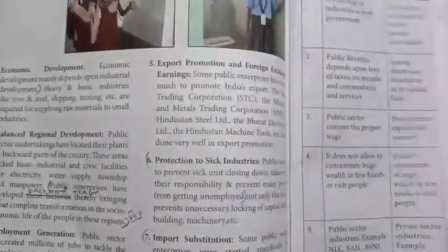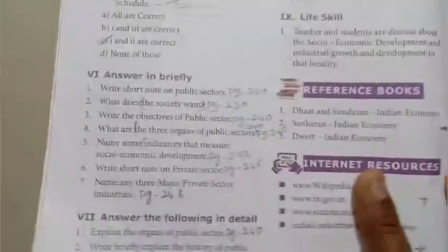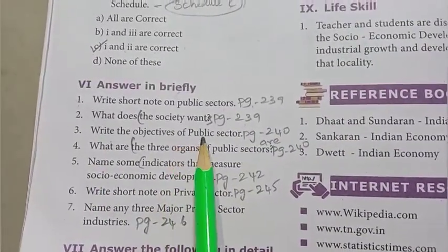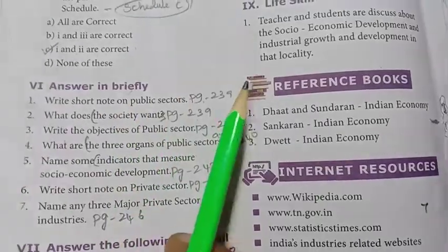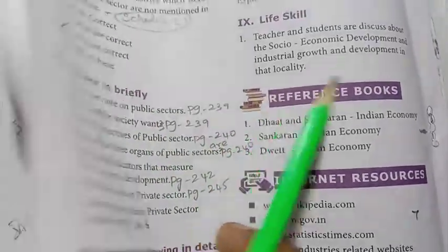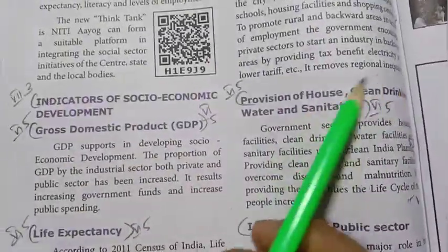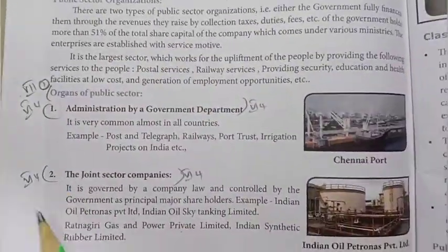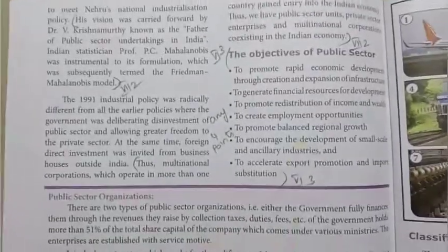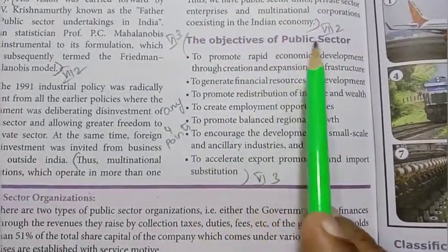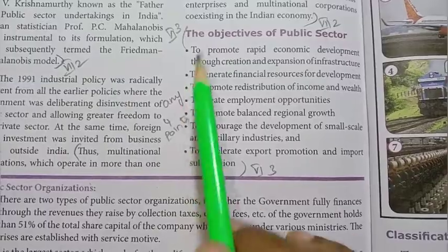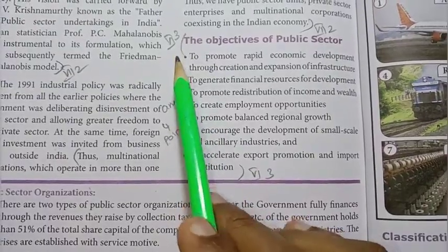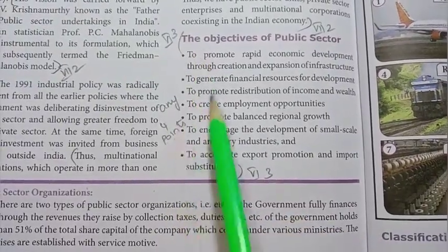Third one: write the objectives of the public sector. Refer to page number 240, under the heading 'objectives of public sector.' Write any four points for the answer.